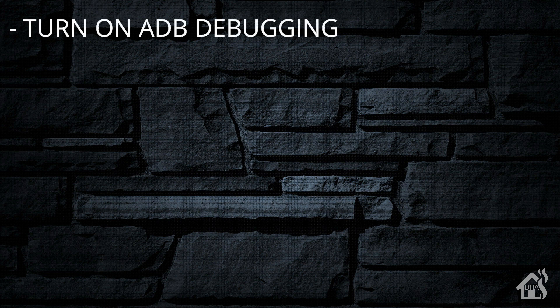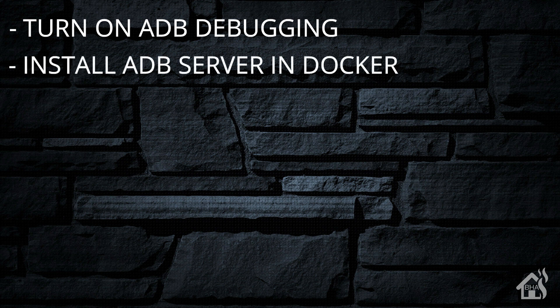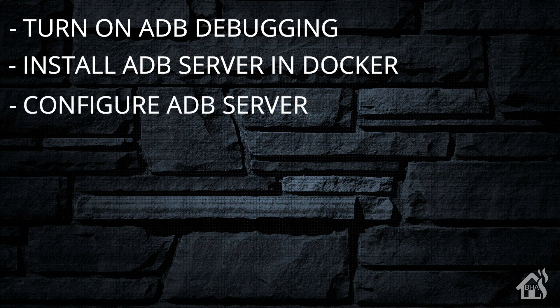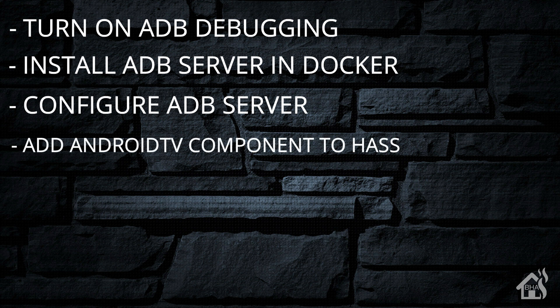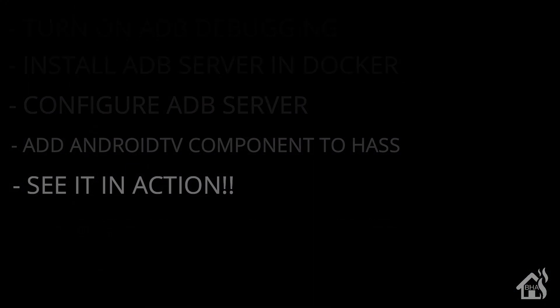Let's do a quick run-through of everything we're going to cover. First, if you don't already have it enabled, you need to turn on ADB debugging on your Fire TV. Once that's done, we install our ADB server in Docker. Then we create our startup script for configuration. After that, we add the Android TV component into Home Assistant. And lastly, we'll see what that looks like in action.